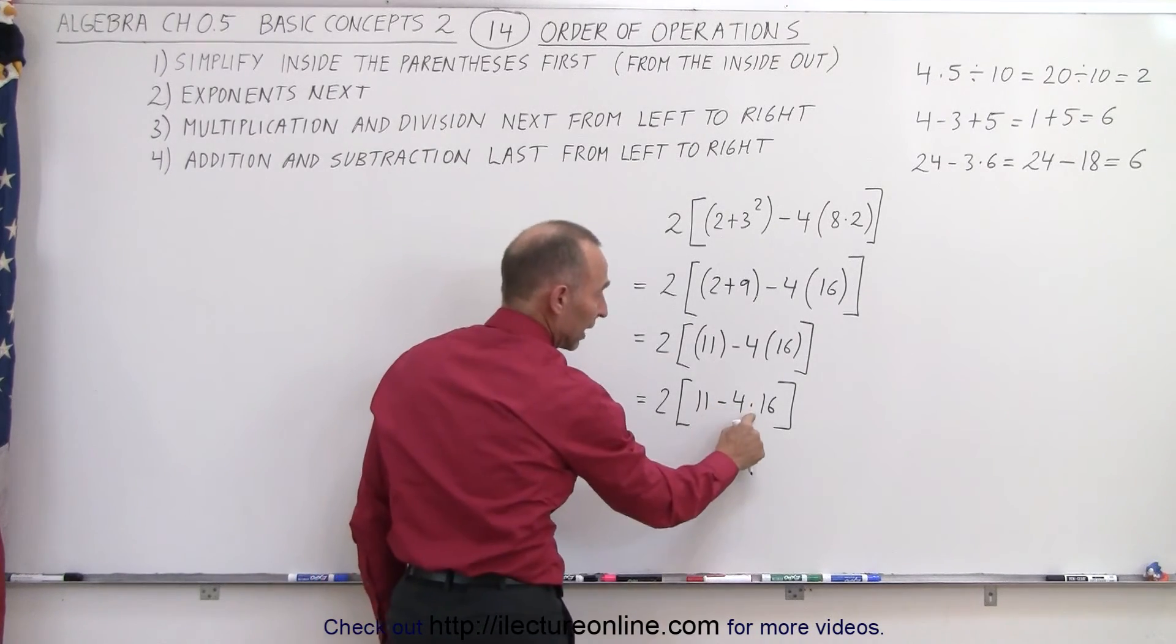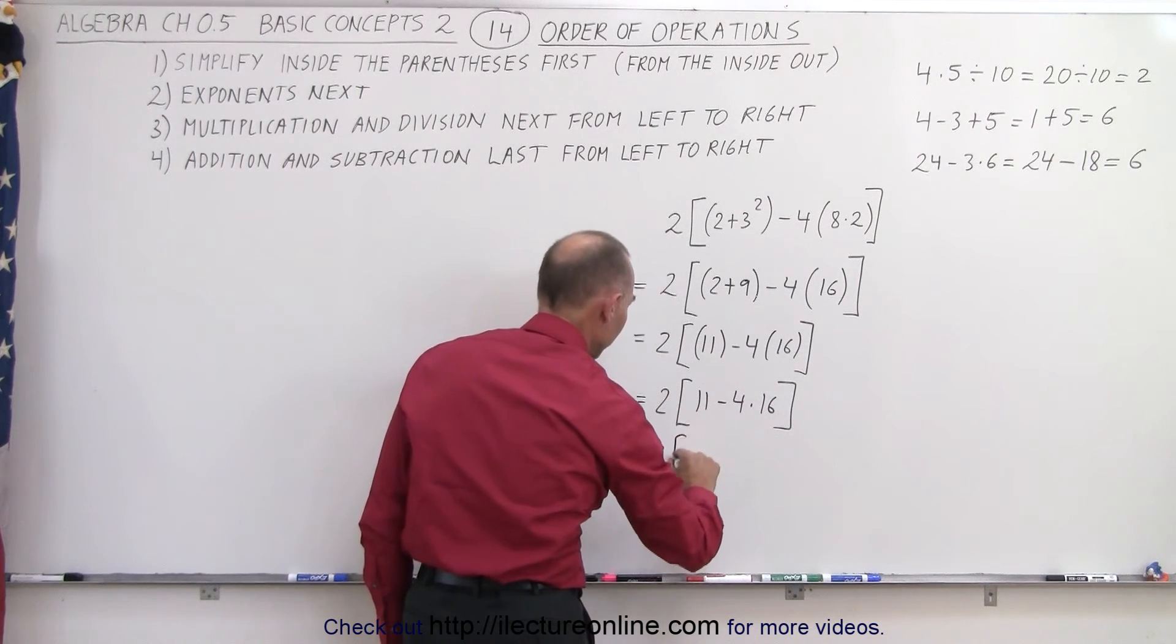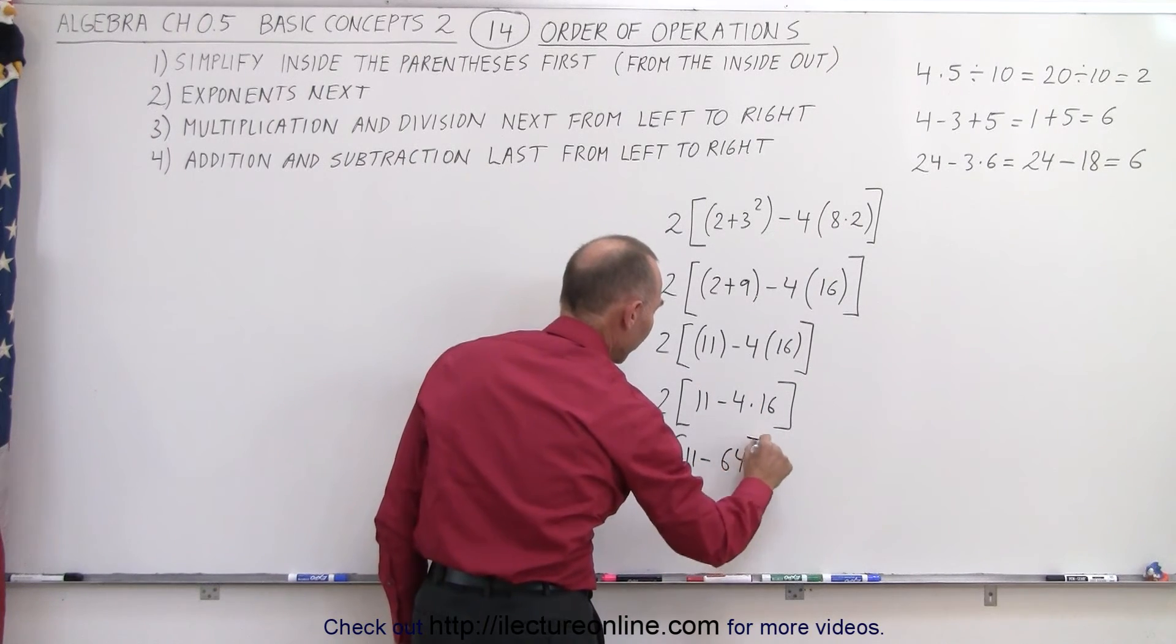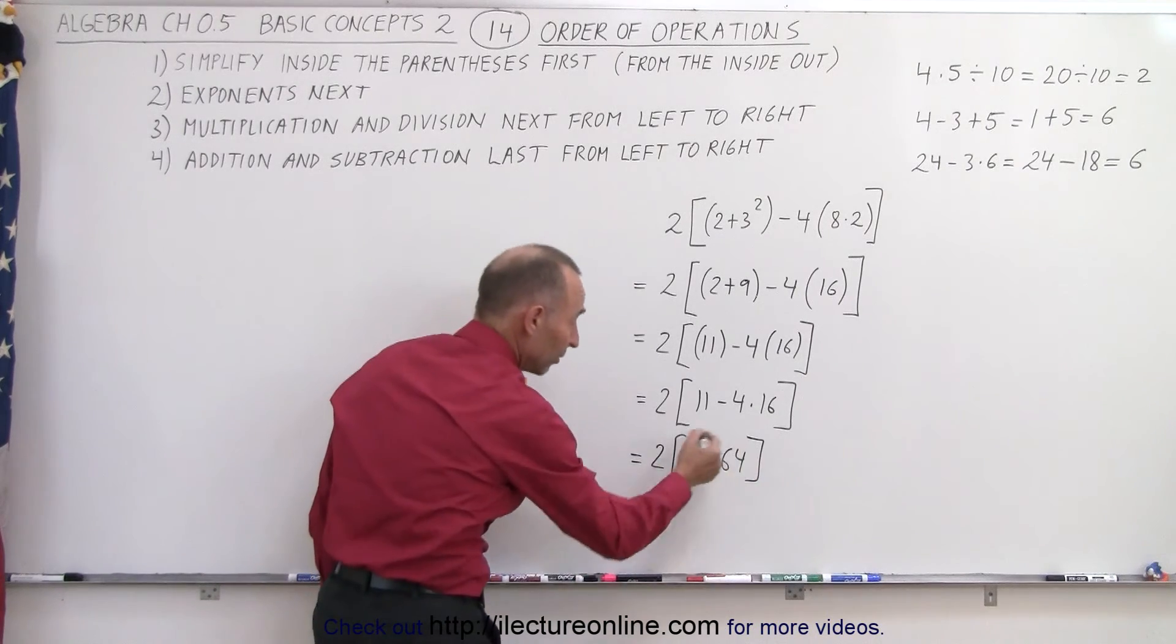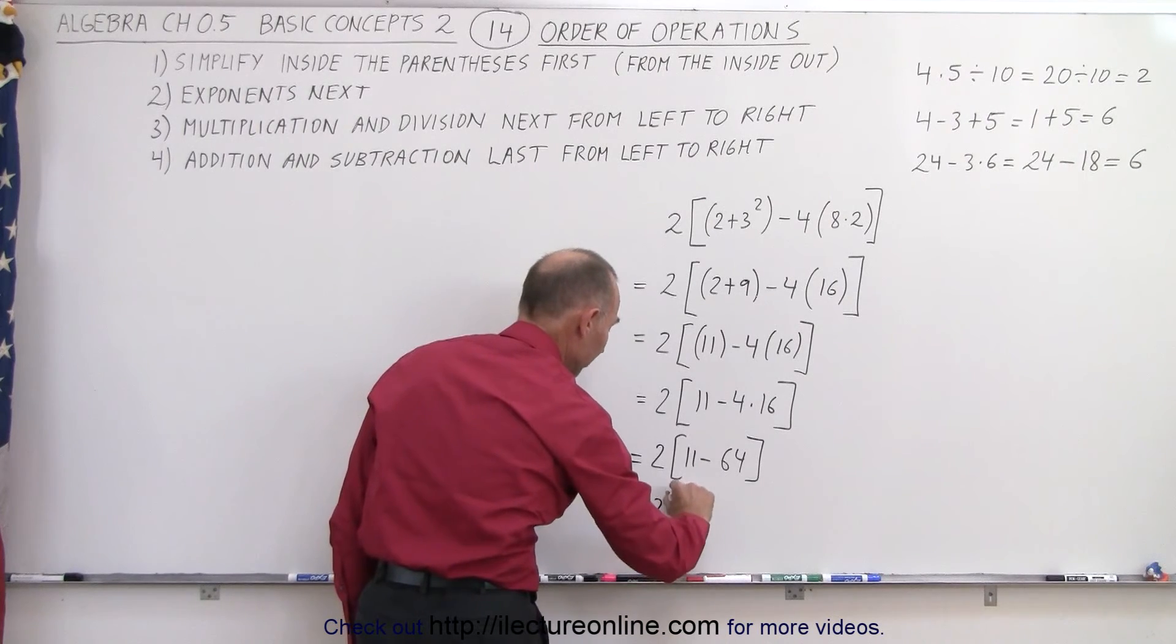We cannot multiply anything times 2 yet, because we have to simplify what's inside the brackets first. And we have subtraction and multiplication. The multiplication must come first. So this is equal to 2 times 11 minus 4 times 16, which is 64. We're still not done with the brackets, because we need to simplify what's inside first before we can multiply times 2.